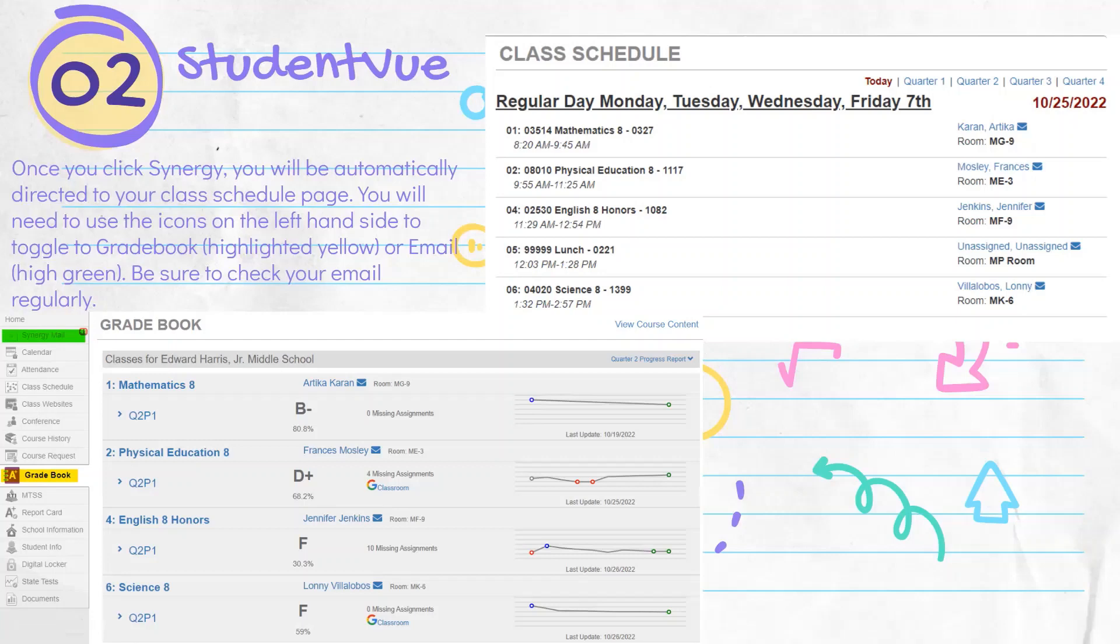For instance, eighth graders are going to be taking the PSAT. And I know Ms. Freeman has sent lots of emails about that. So always check your Synergy mail here highlighted in green.